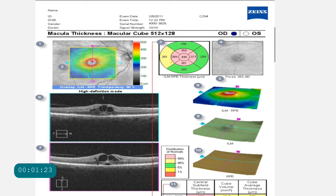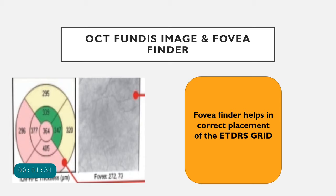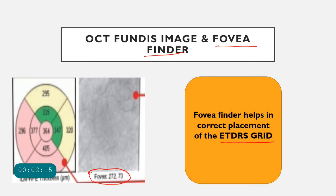After the ETDRS grid, number four on the printout indicates the OCT fundus image. This is a more high-definition image compared to the previous one, where the macular anatomy is more clearly visible. Moreover, we have a fovea finder — an algorithm present in the machine itself — which helps find the exact location of the fovea for the proper placement of the ETDRS grid. The ETDRS grid must be precisely centered on the fovea, and for that, the fovea finder algorithm is already present in the Cirrus OCT.